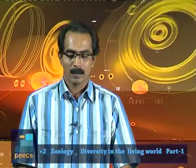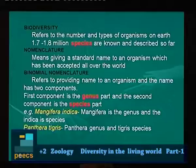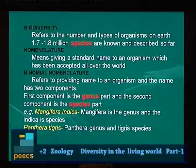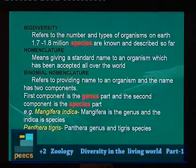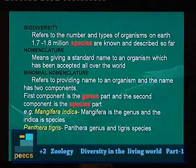The diversity of organisms is amazing and wonderful — that is biodiversity. Biodiversity refers to the number and types of organisms on Earth. 1.7 to 1.8 million species are known and described so far.